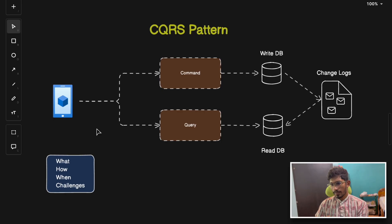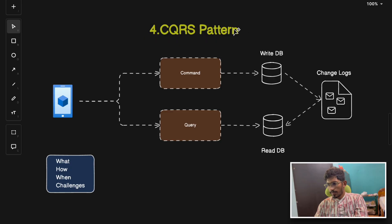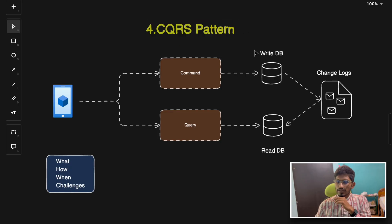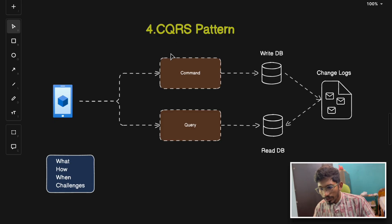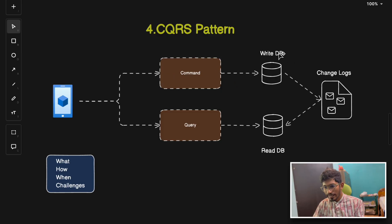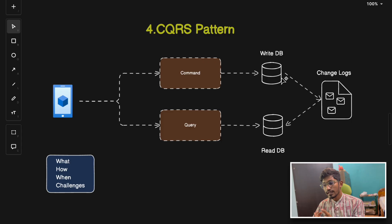The fourth pattern is CQRS — Command Query Responsibility Segregation. Command is coupled with write operations; query is coupled with read operations. CQRS splits read and write operations into separate models to optimize database interactions. Write operations are handled by a command model with a separate write database, and read operations are handled by a query model that retrieves data from a separate read-optimized database.